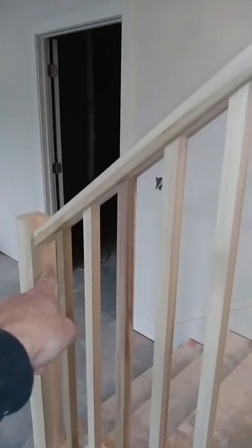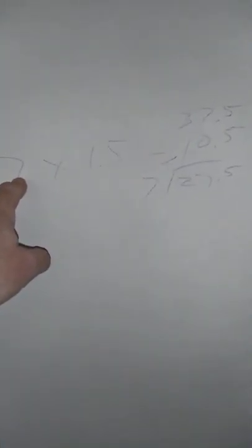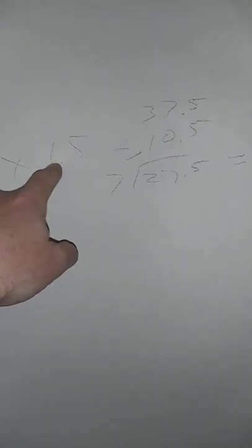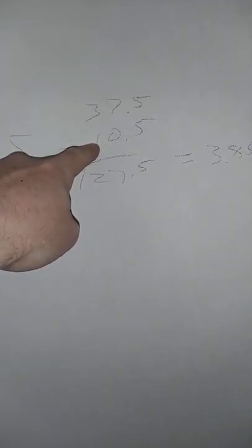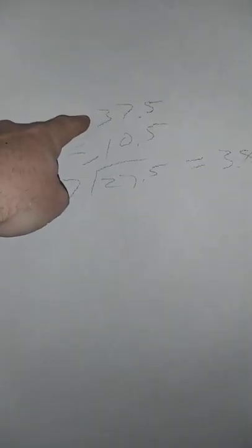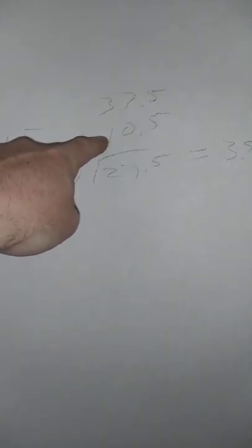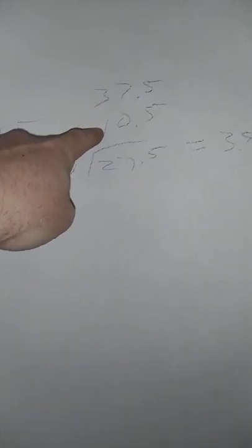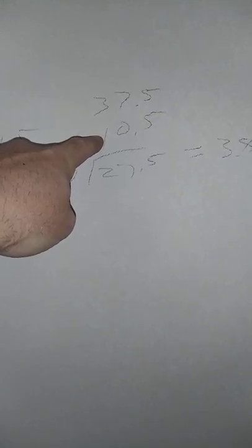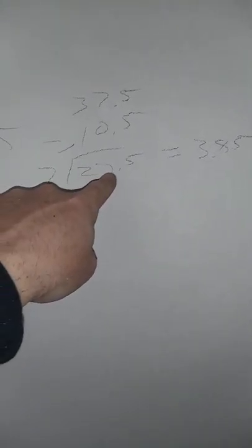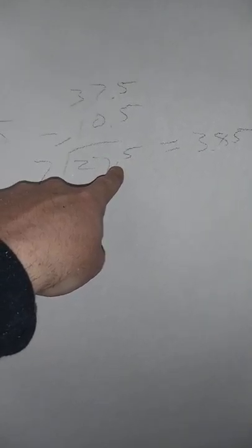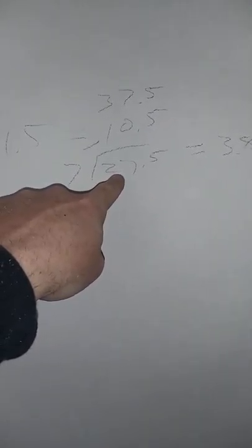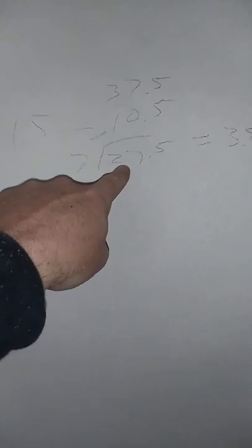To do the math: I have 37 and a half inches from wall to post, and I'm using seven balusters. Seven balusters at an inch and a half each equals ten and a half inches. Take your overall length and subtract the total width of all your balusters combined — subtract ten and a half inches — and you get twenty-seven and a half inches.